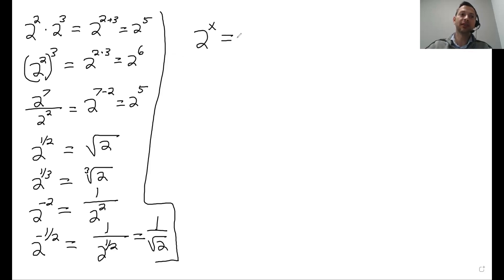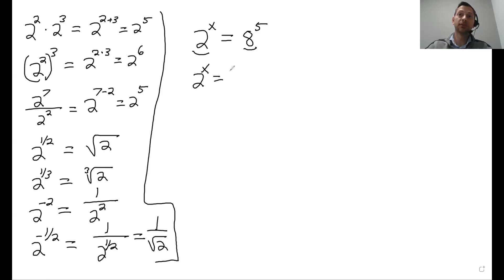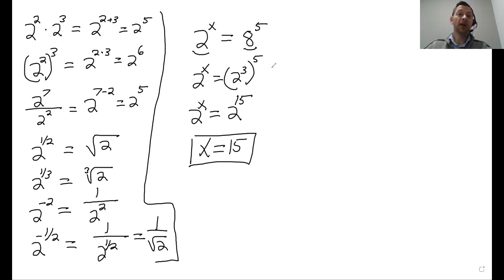They can ask you, for example: 2 to the x is equal to 8 to the 5. When you see this, you always want to get the exponents in the same base. Here I have a base of 2 and a base of 8. I can't change the 2, but I can change the 8 — 8 is 2 to the 3. So this becomes 2 to the x equals 2 to the 3 to the 5. Exponent to exponent means you multiply: 3 times 5 is 15. So 2 to the x equals 2 to the 15, meaning x equals 15. Whenever you can change the base to be the same, do it — simplify as much as possible.